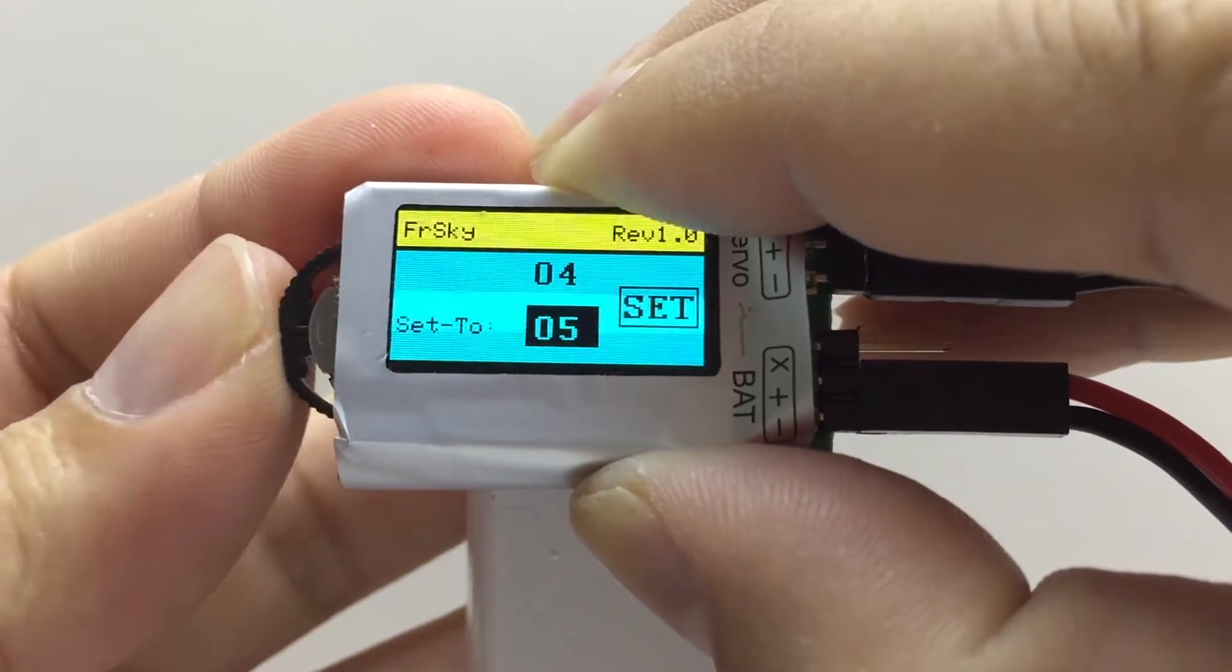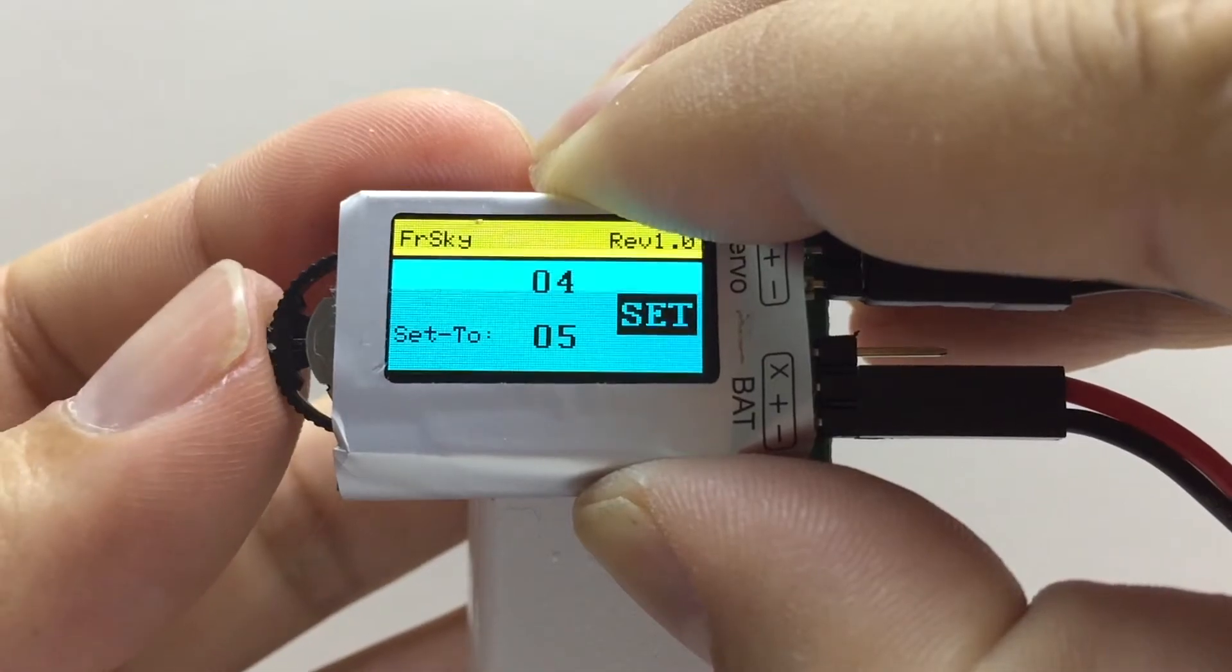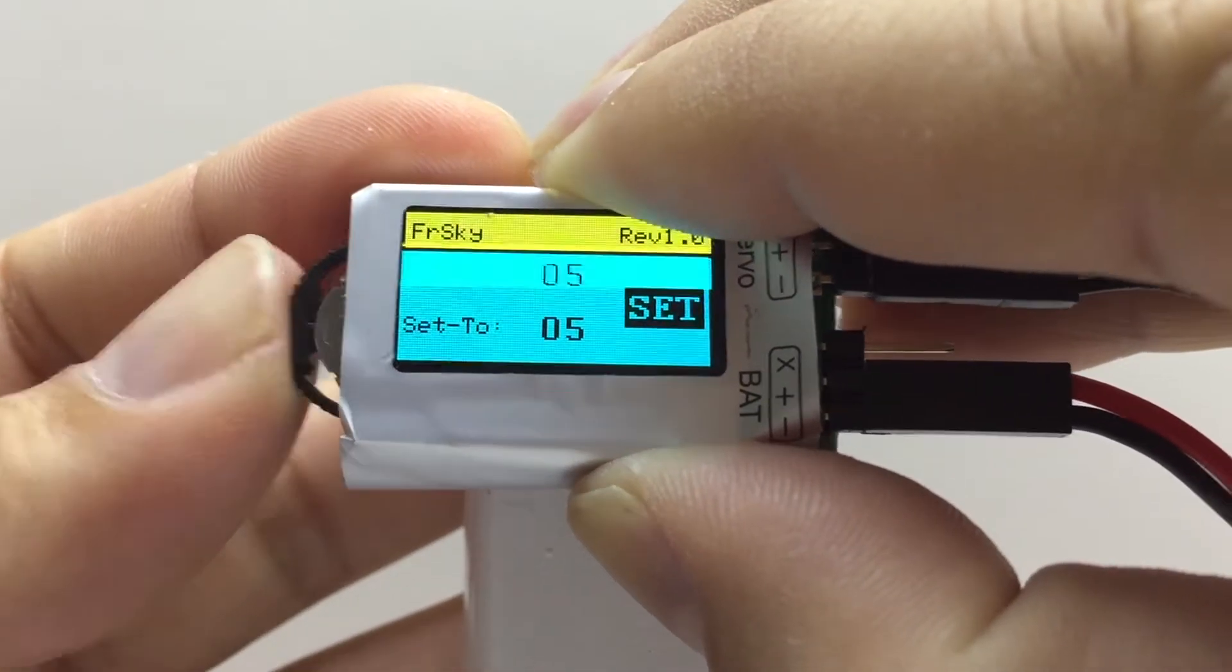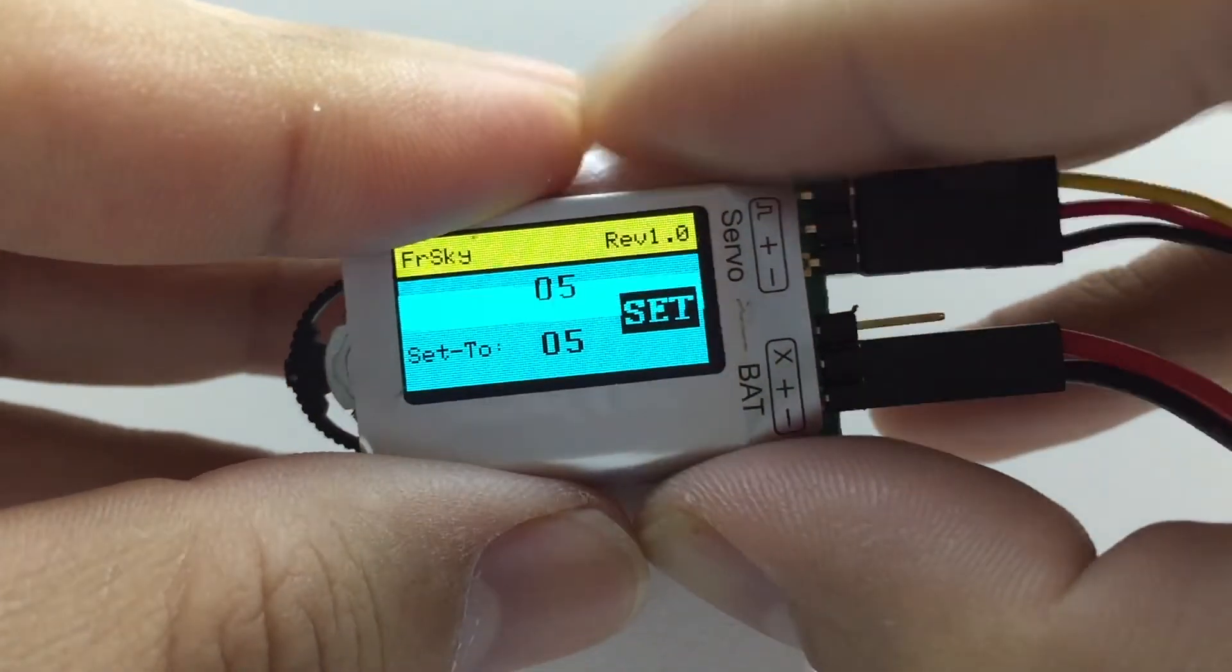Press the wheel. Both digits are now highlighted. Turn the wheel up. Set is now highlighted. Press the wheel. The sensor ID will change to match the set 2 number.